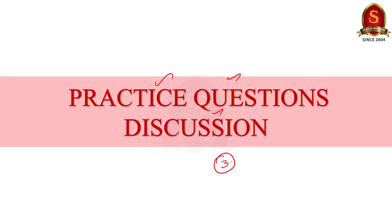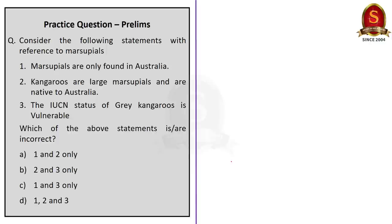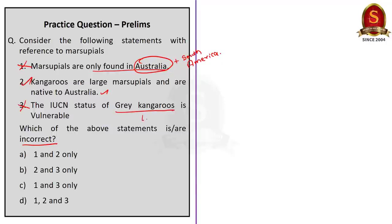We have three practice prelims questions today. The first question is about marsupials with three statements, and we need to find the incorrect ones. Statement 1 — Marsupials are found only in Australia — is incorrect because most marsupials are found in Australia and South America. Statement 2 — Kangaroos are large marsupials native to Australia — is correct. Statement 3 — IUCN status of gray kangaroos is vulnerable — is incorrect because the IUCN status of gray kangaroos is least concerned. Therefore, the correct answer is option C: 1 and 3 only.